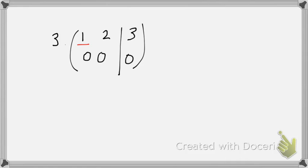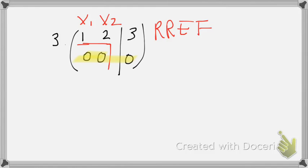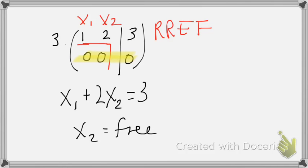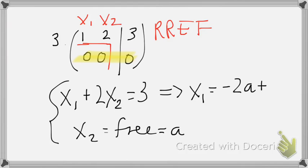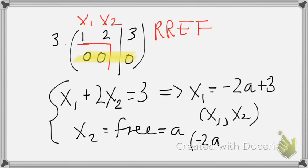The third matrix has a leading one in the stair-step pattern, so it is in REF. With variables x1 and x2, the second row is all zeros, so the only equation is x1 + 2x2 = 3. Since x2 has no leading entry, it is a free variable. Letting x2 = a, we get x1 = -2a + 3, so the solution is (x1, x2) = (-2a + 3, a) for any real number a — infinitely many solutions.